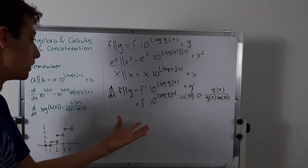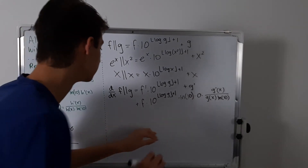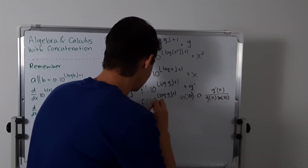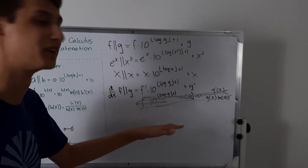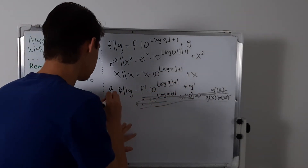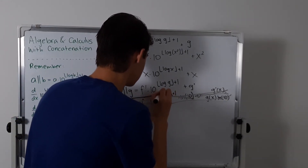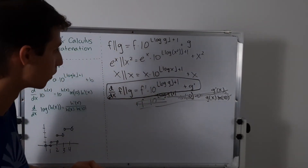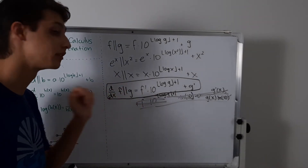This whole middle term is going to go away because we have the 0 there from the floor function derivative. So really, the entire derivative simplifies to just f prime times 10 to the floor of log of g plus 1, plus g prime. That's our derivative of f concatenated with g.